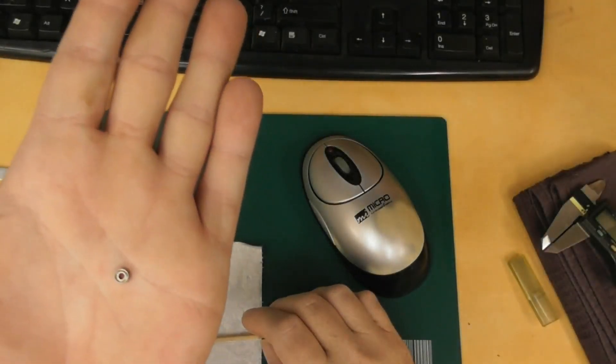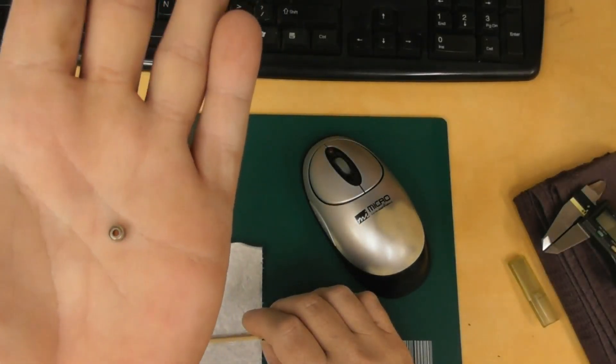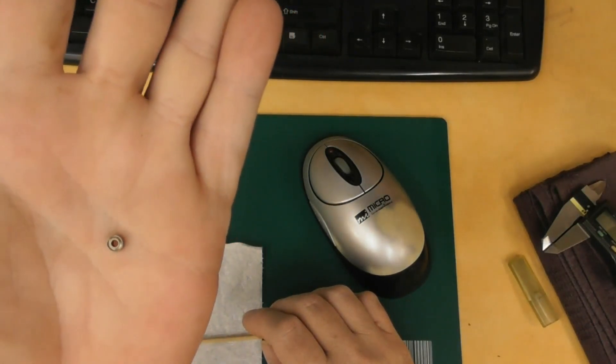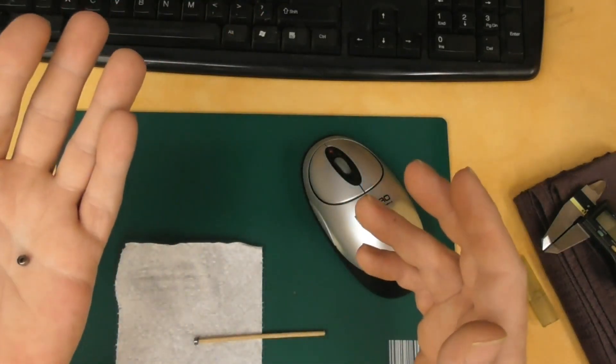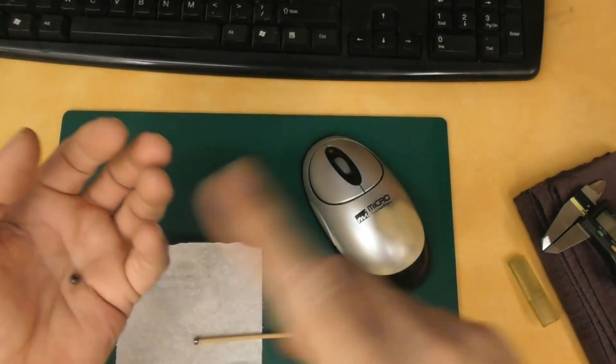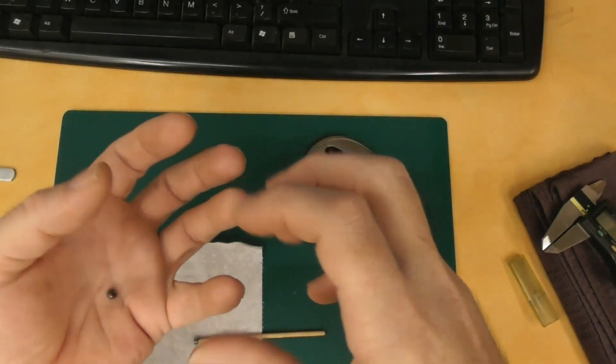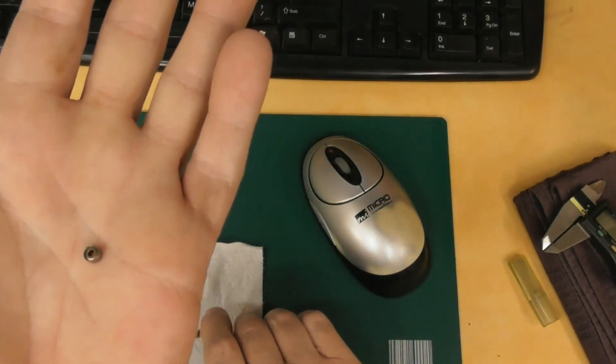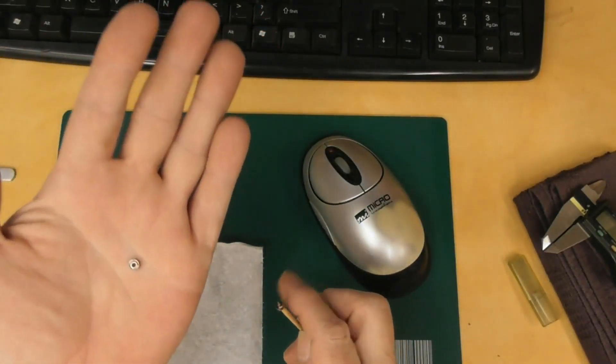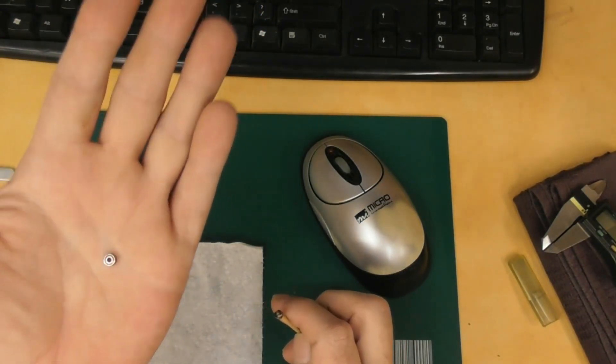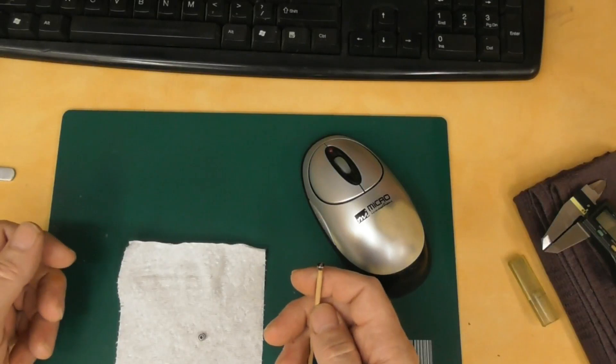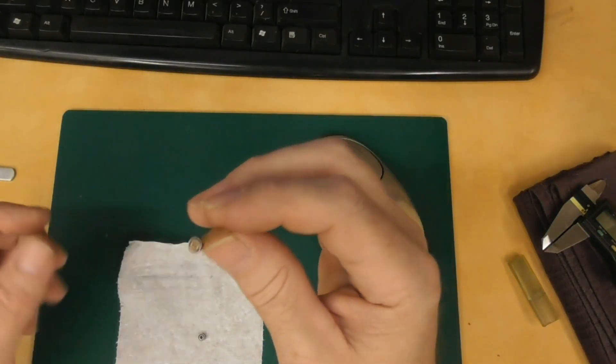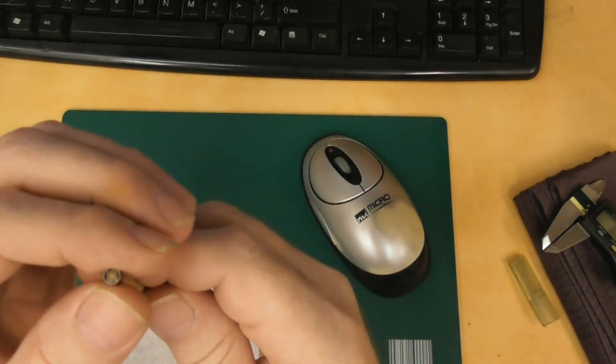Well all right guys, that is the smallest bearing I've ever tried to service in any manner. It's not uncommon for me to pop shields off of bearings—they're usually steel caged—clean them out, repack them, put the shields back on. But never anything that small. That's the smallest bearing I think I've ever seen. Whether or not they make one smaller than that, I do not know.